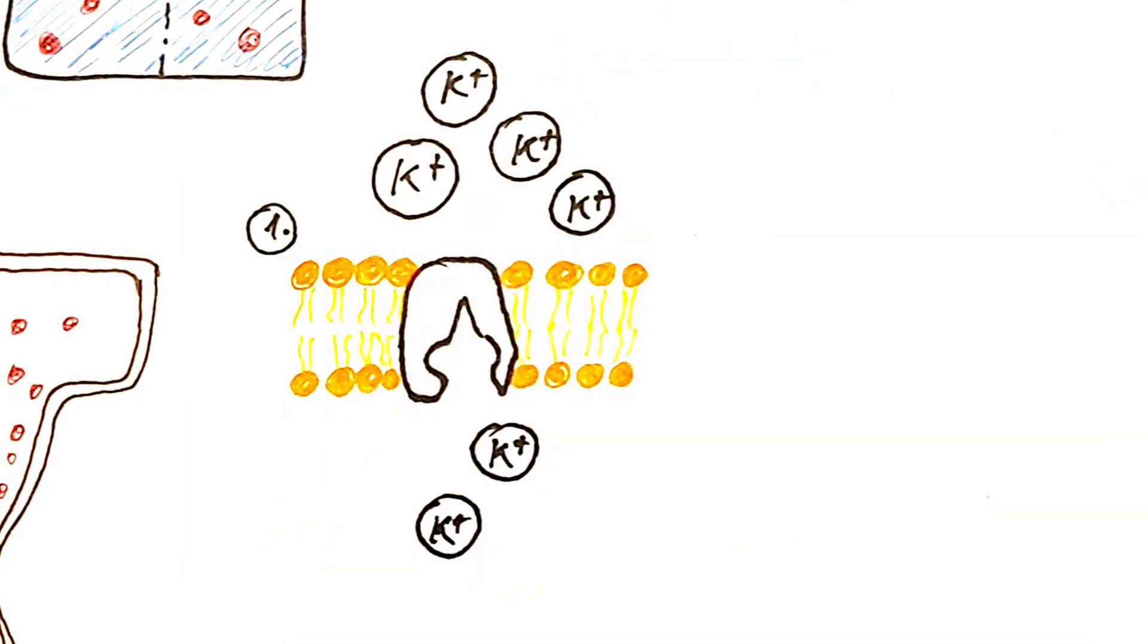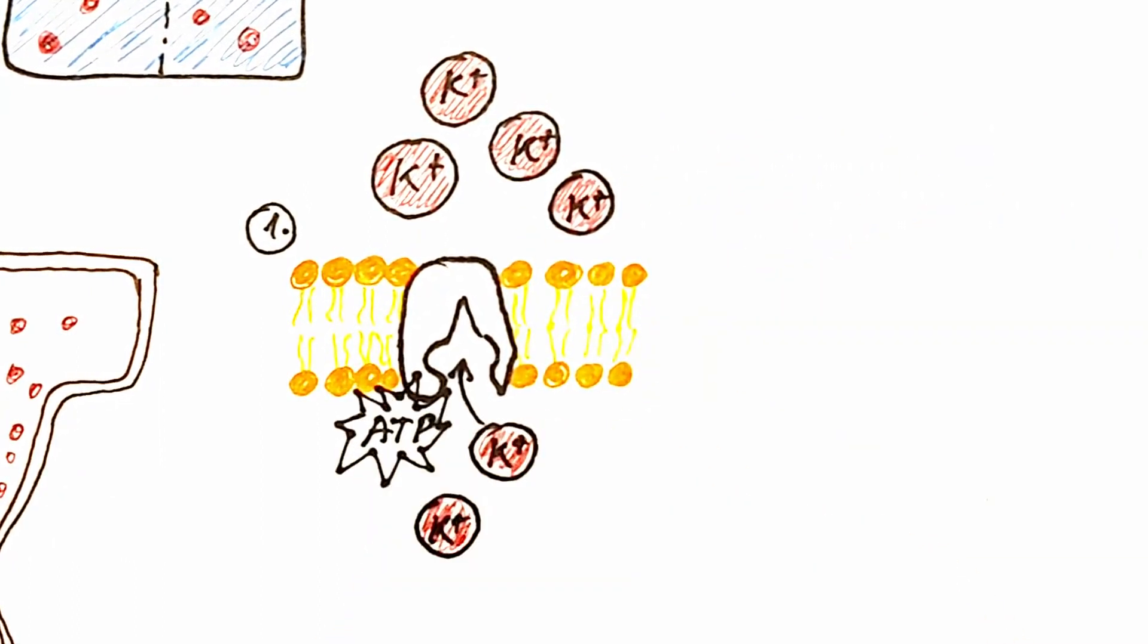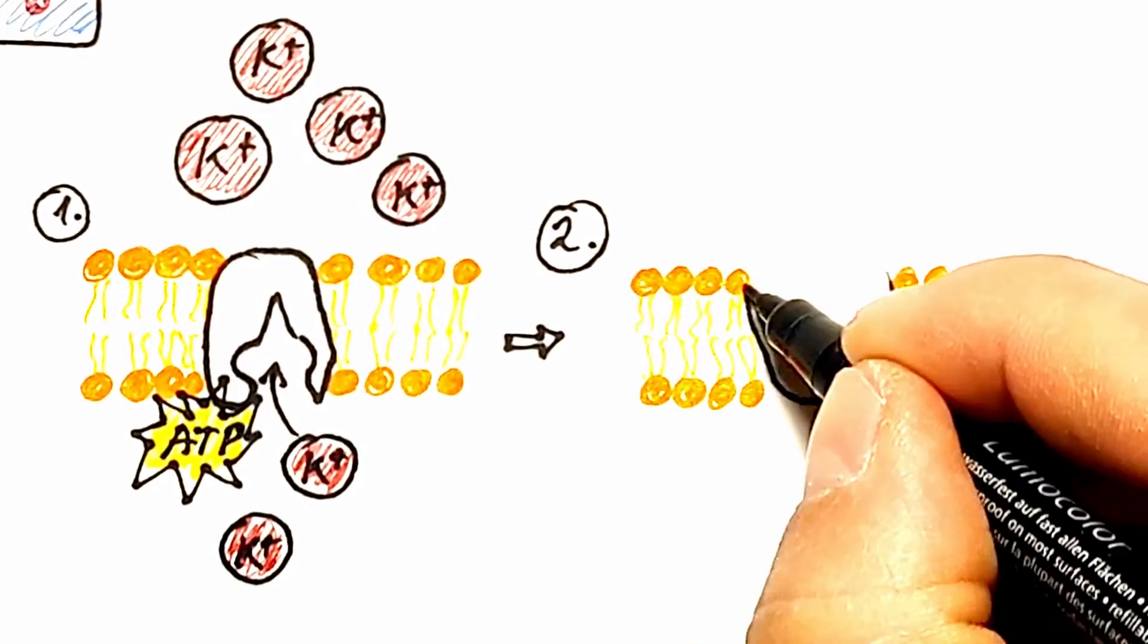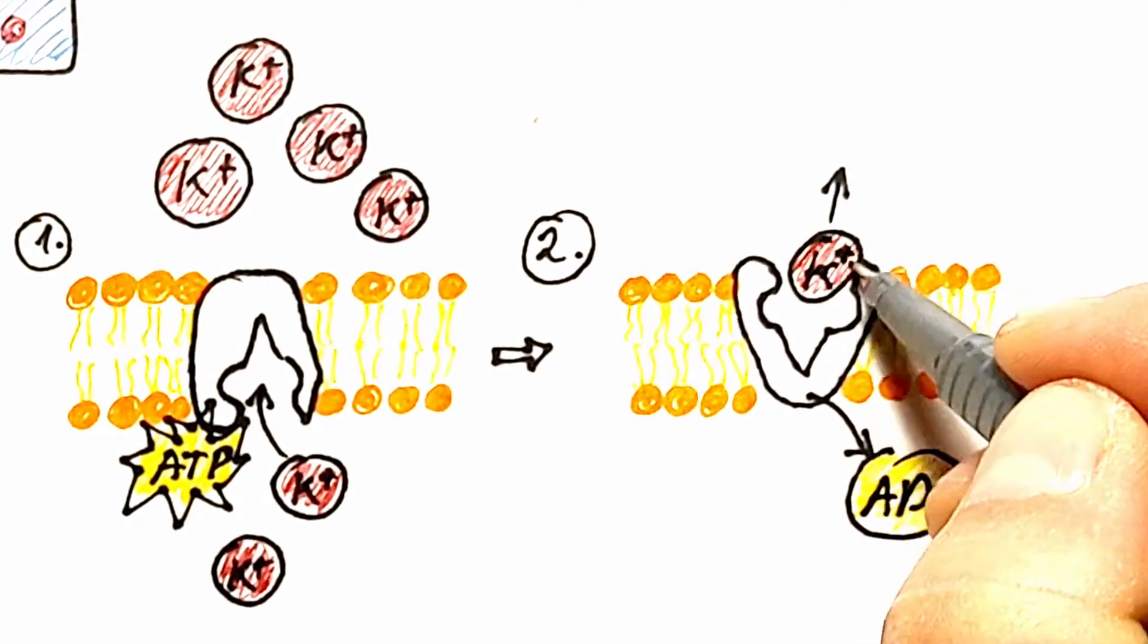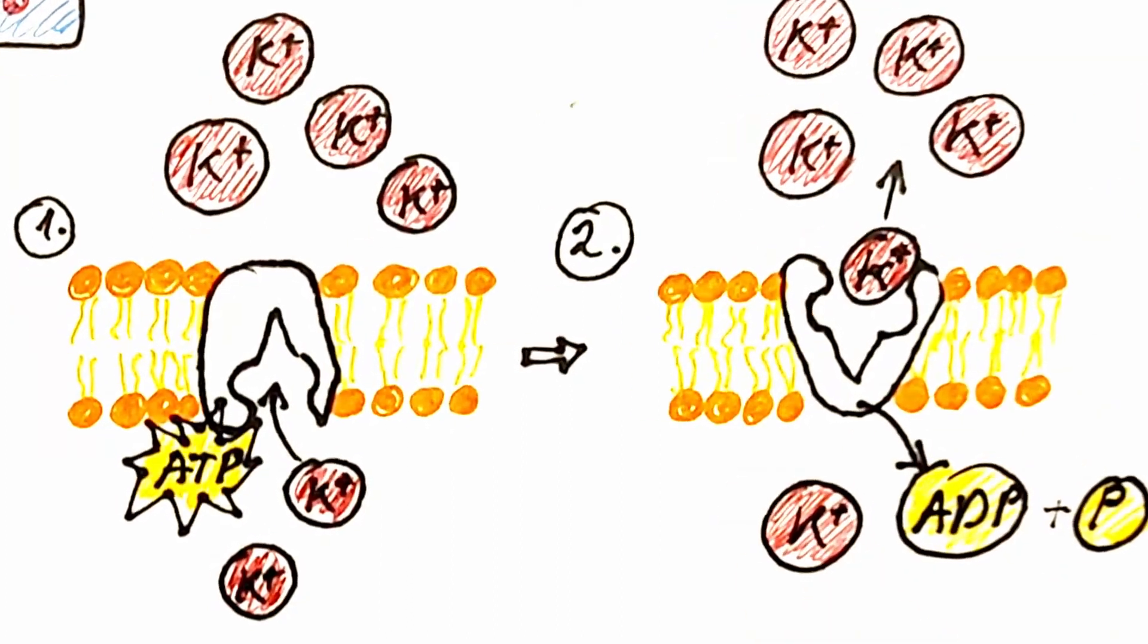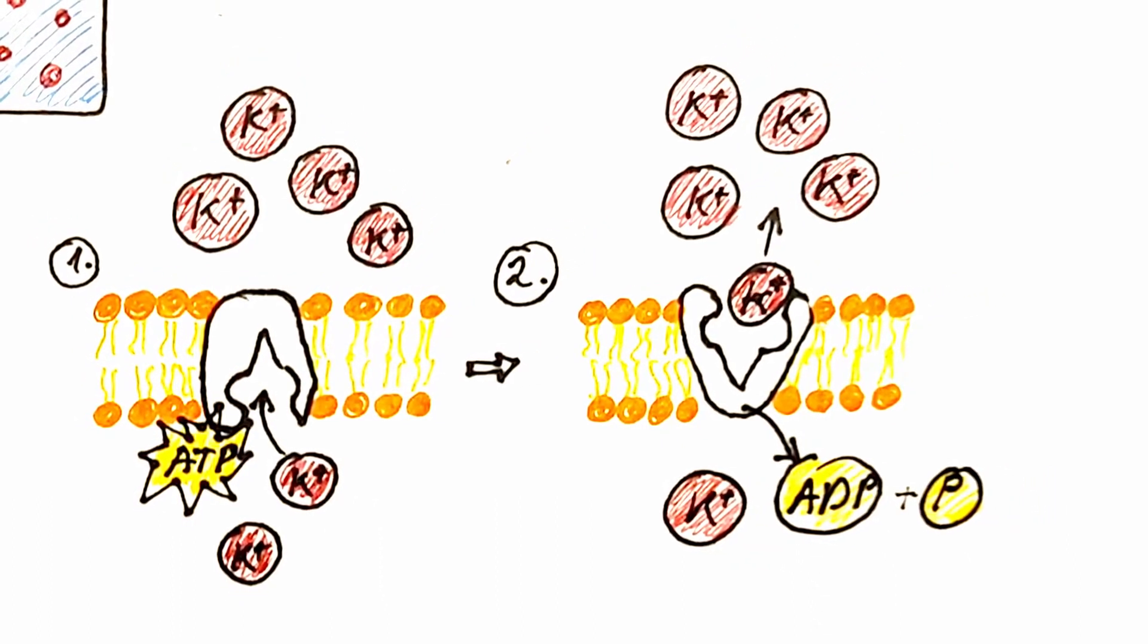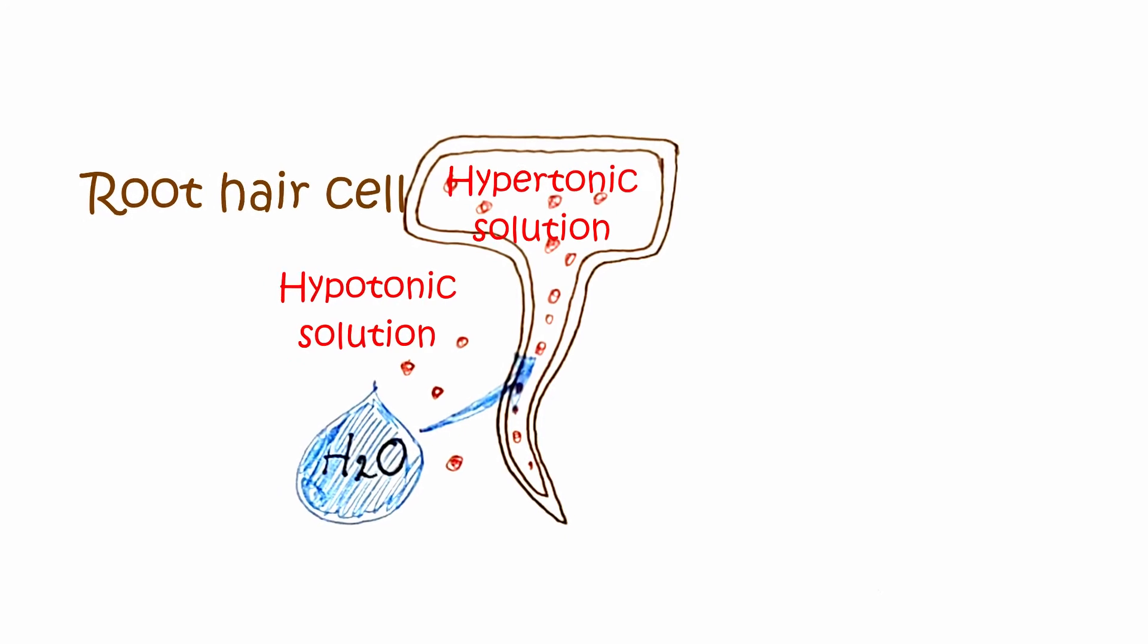This type of transport is called active and requires energy consumption in the form of ATP, because minerals are transported against the concentration gradient, that is, from the area of their lower concentration to the area of their higher concentration. The energy of ATP molecules is spent on changing the shape of the transport membrane protein, which results in the transport of the mineral ion across the membrane. We can conclude that without the energy obtained from the ATP molecule, there's no active transport of minerals into the root cells, nor the achievement of hypertonicity prerequisites for the entry of water by osmosis.